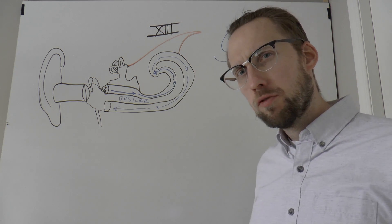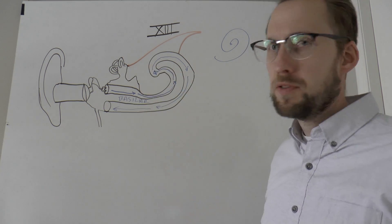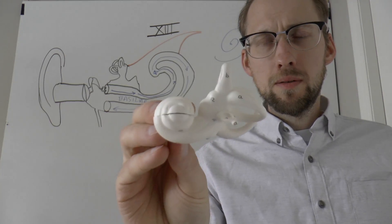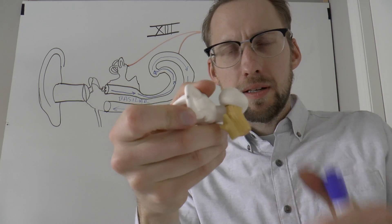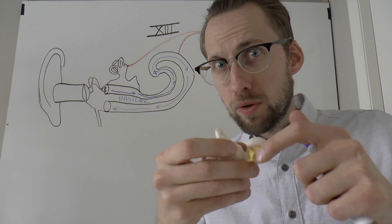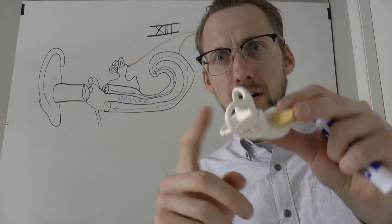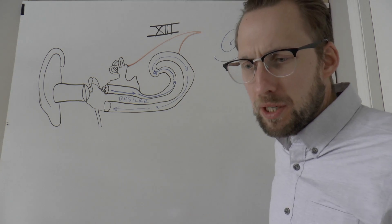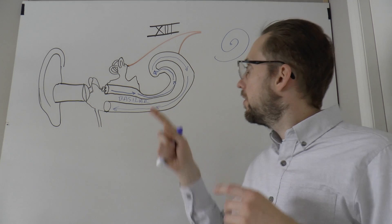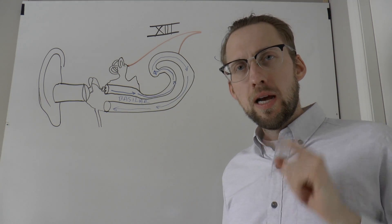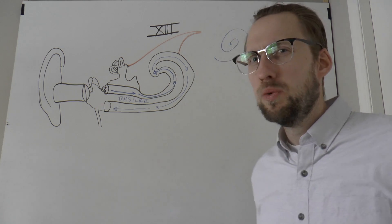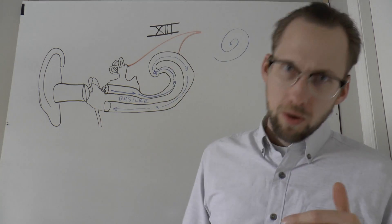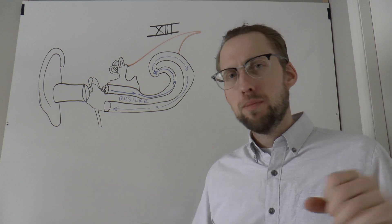The other half of the vestibulocochlear nerve comes from the vestibular system. You can see the cochlea right here, and that yellow structure is the vestibulocochlear nerve — the auditory branch. The other half comes out of three tunnels that make up your vestibular system: your balance organs. These tunnels have different orientations and allow you to know the orientation of your head.